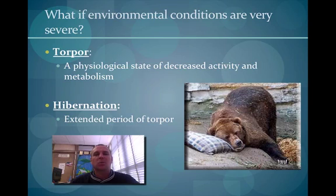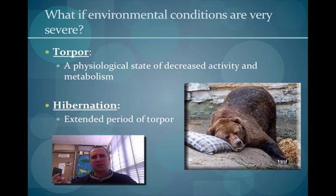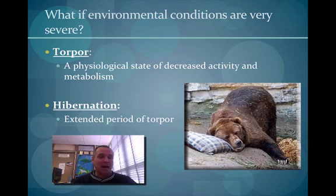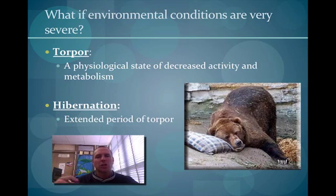What if environmental conditions are very severe? An animal can try to combat them, or it can enter what's called torpor — a physiological state of decreased activity. Hibernation is an example of an extended torpor. Bears, for instance, slow their metabolic rate. If you slow your metabolic rate, you reduce the amount of energy you need, making it easier to survive during severe and harsh conditions.